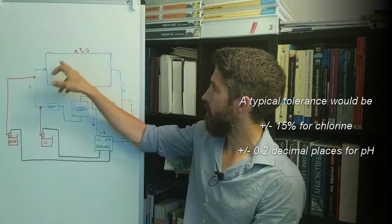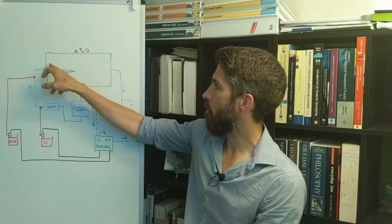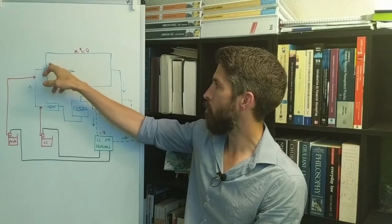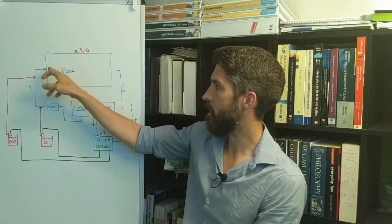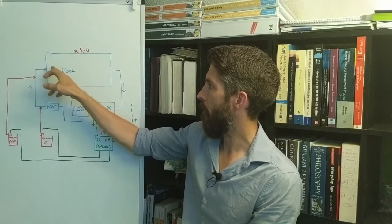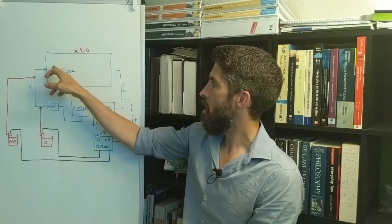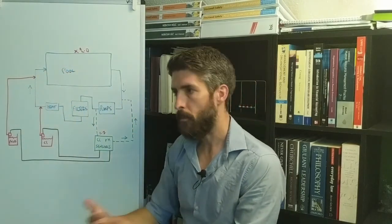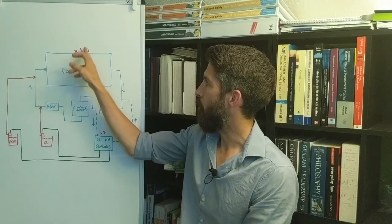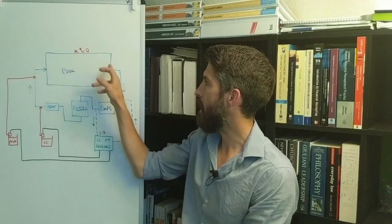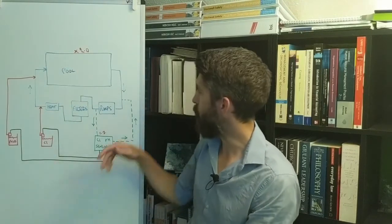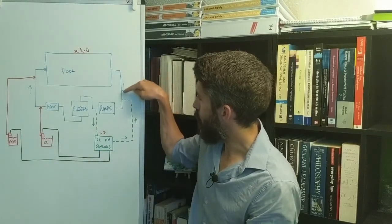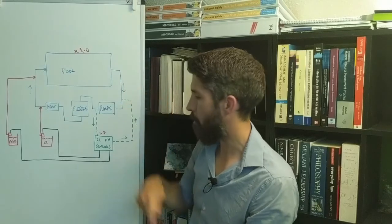But think about it, what happens is as water is moving through the pool, in this instance from left to right, chlorine is being depleted, it's being used up. When you take a sample from there and it's two, by the time it gets to the deep end it might have dropped a bit because chlorine is being used up, and then it's got to go through pipework and into the plant room.